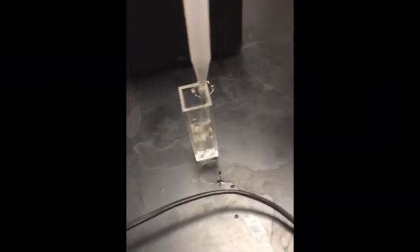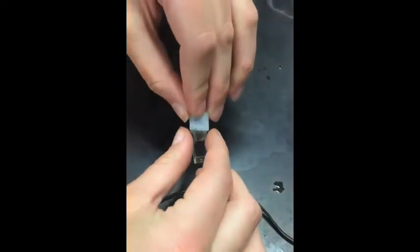When doing a colorimeter calibration, fill the cuvette with three-fourths of distilled water. Place the lid on the cuvette.